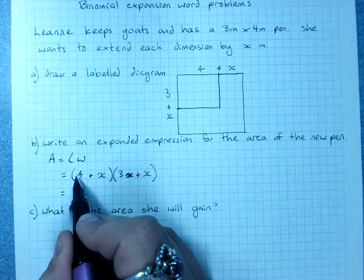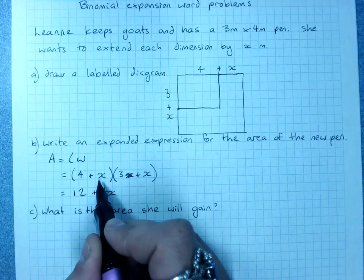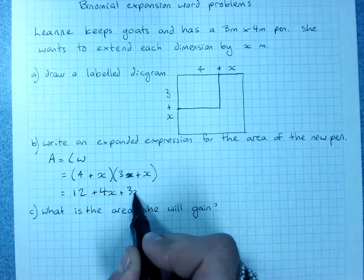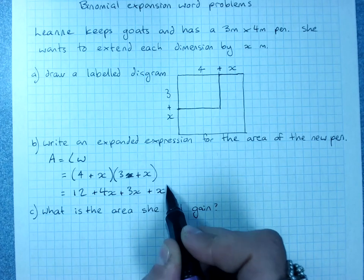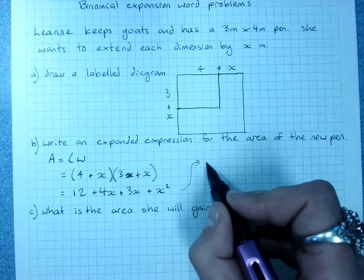Four times three is twelve. Four times x is plus 4x. x times three plus 3x. x times x plus x squared. And I ran out of space but that equals,